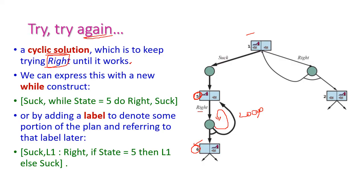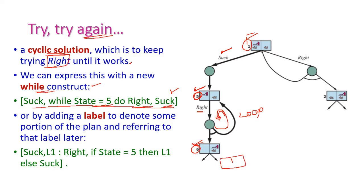This is expressed using a while construct: suck, while state equals 5 do right, then suck. In state 1, implement suck to reach state 5. In state 5, if we reach state 5 after executing suck, then do right — the right operation executes continuously until it reaches state 6. If it is state 6, then implement suck to reach the goal state, that is state 8.